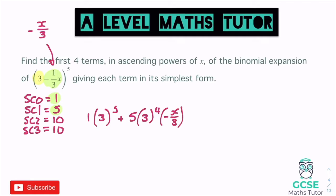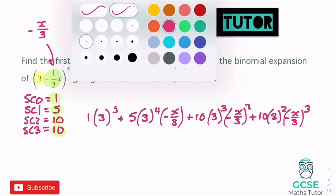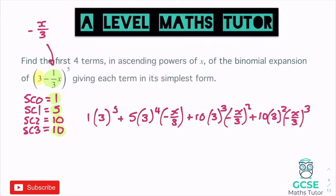Onto the next piece: we have 10 lots of three to the power of three, and then negative x over three is now being squared. And for our last piece: 10 lots of three to the power of two, and negative x over three is now going to be cubed. So let's deal with all these pieces. The first one: three to the power of five is 243.